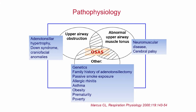In children with Down syndrome or other craniofacial anomalies, you can also have facial hypoplasia or other causes of upper airway obstruction. Normal upper airway muscle tonus is important to keep airways open, so abnormal muscle tonus — as present in children with neuromuscular disease or cerebral palsy — puts children at risk. There is heritability of OSA, and in children there's usually a family history of snoring or adenotonsillectomy. Passive smoke exposure, allergic rhinitis, asthma, obesity, prematurity, and poverty are also significant risk factors.